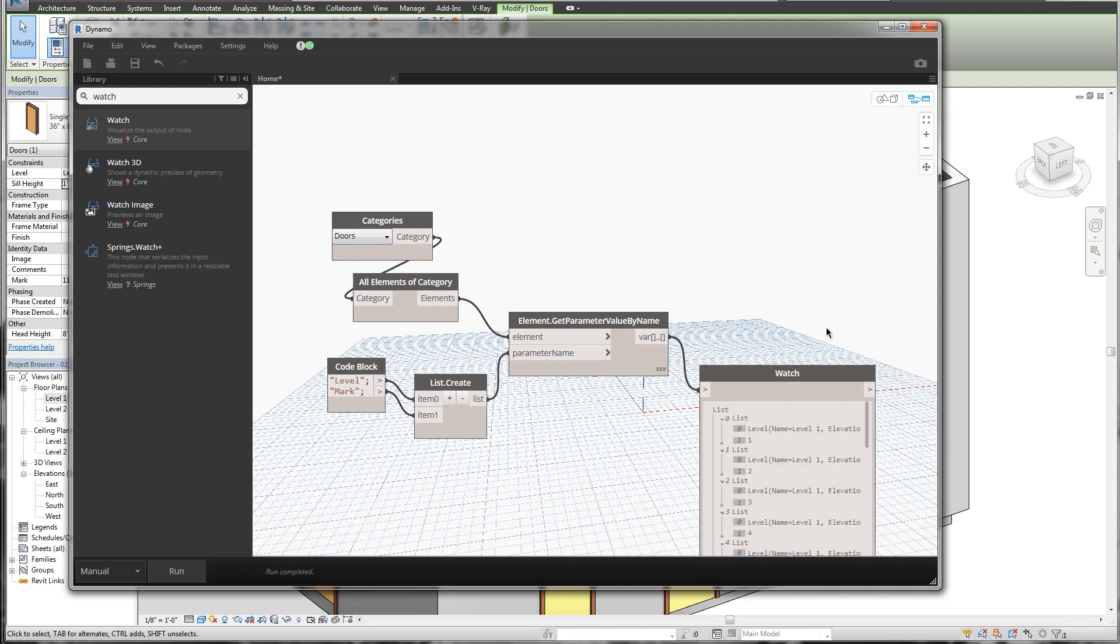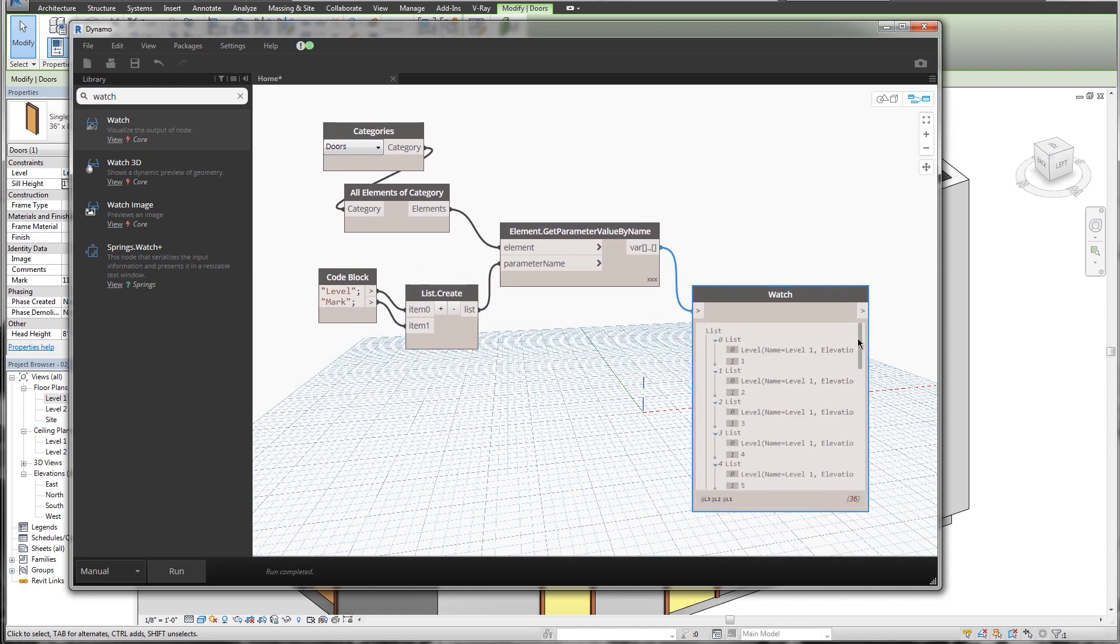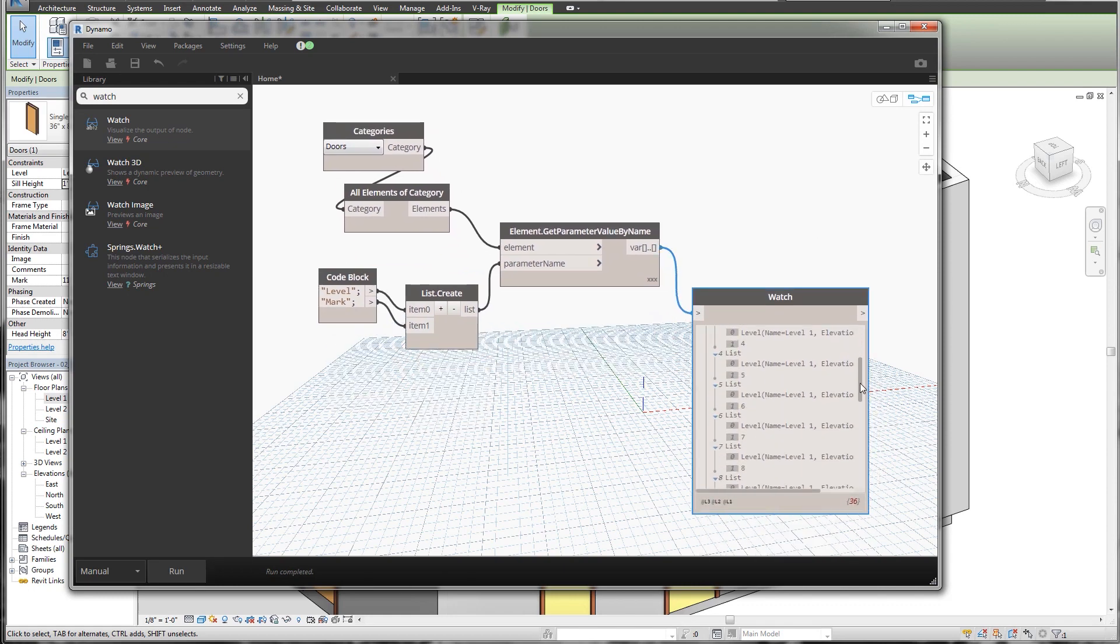Now if I click run, you'll see I'm actually returning a list based on each element, and there should be 17 or 18 based on a zero start index, 18 doors, and we have the level and the mark information for each one.